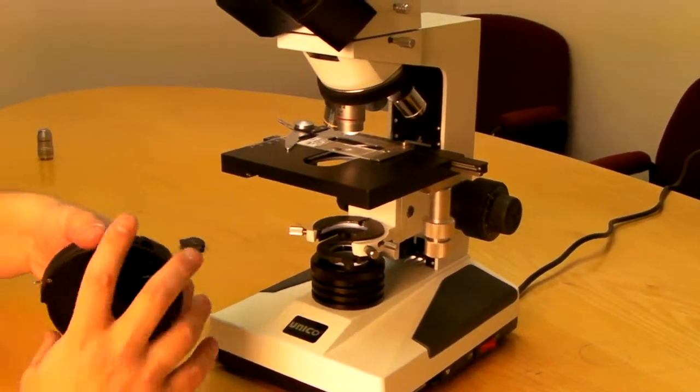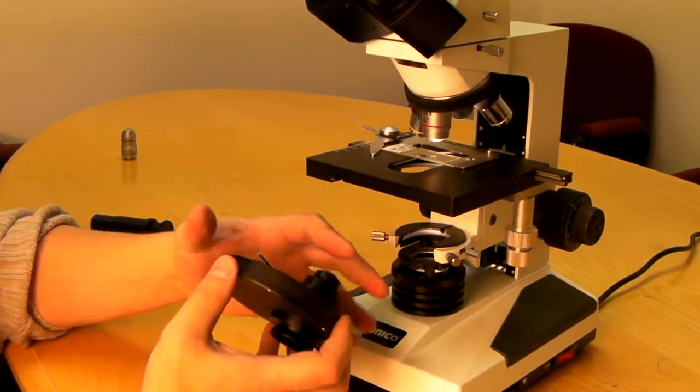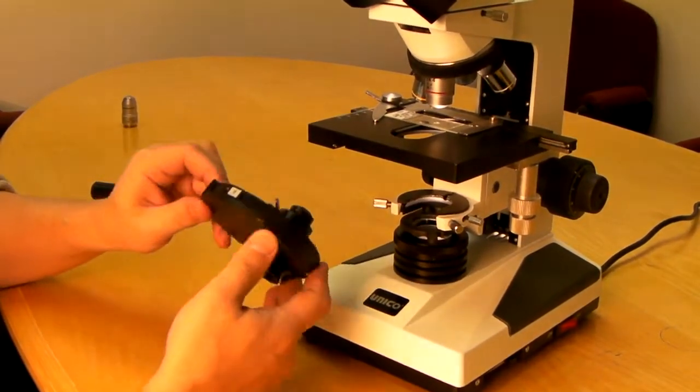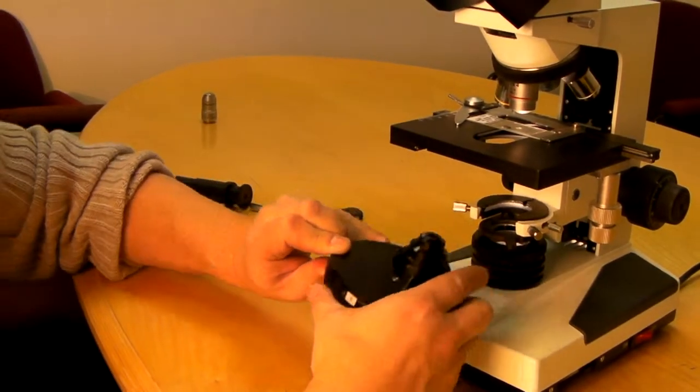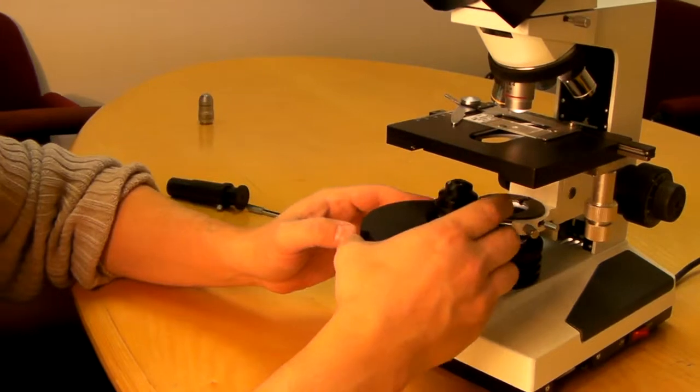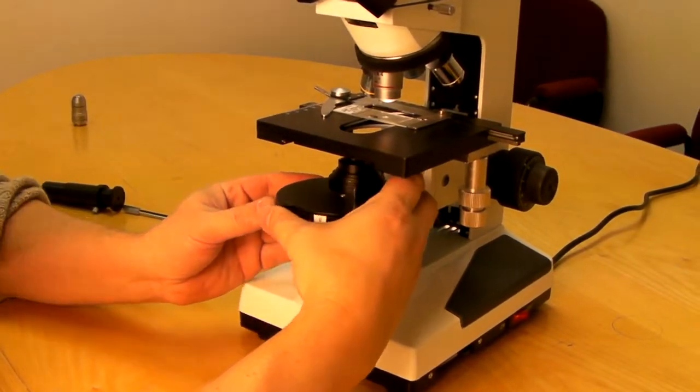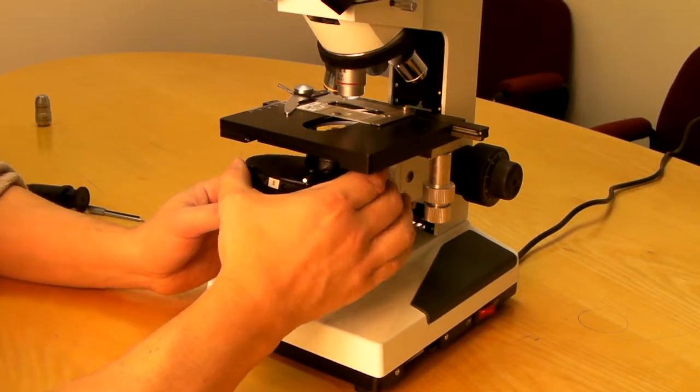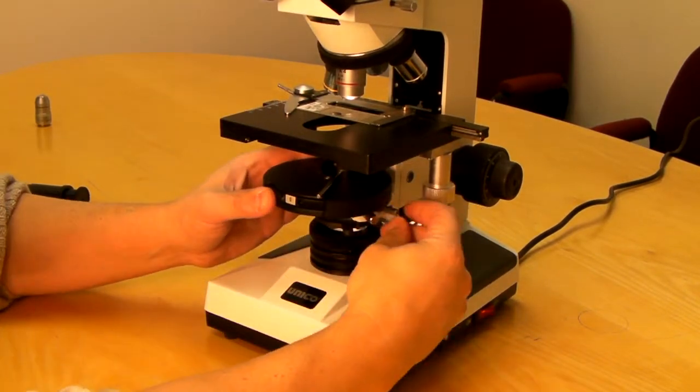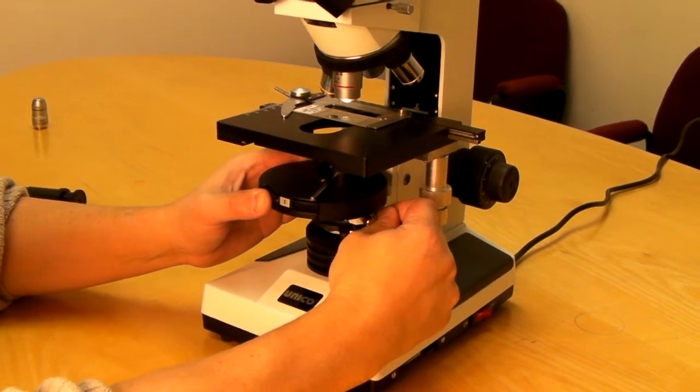Take your phase condenser. Your phase condenser has the guiding screw right here. Make sure it matches the groove. Carefully position it and secure with the same screw.